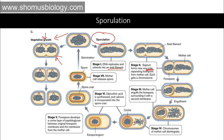The third step is when the mother cell starts engulfing the forespore. As the mother cell engulfs the forespore, the membrane that the spore originally had is one layer, and now as the mother cell engulfs it, the spore gets a second layer of membrane. So now the chromosome is inside a double layer of membrane.